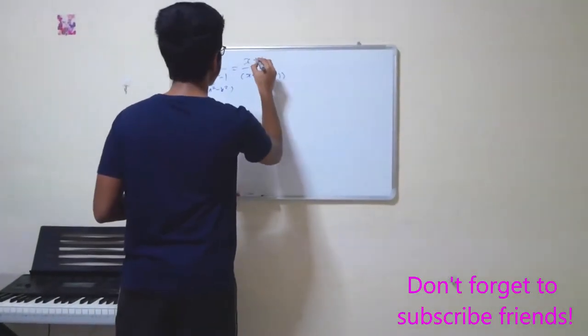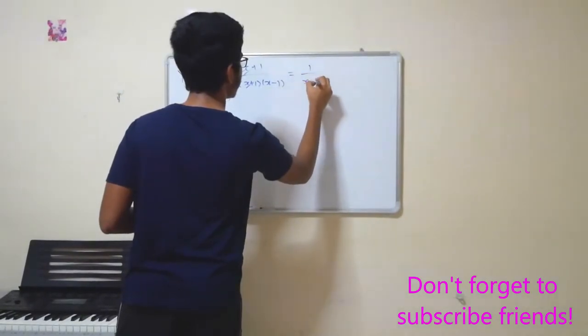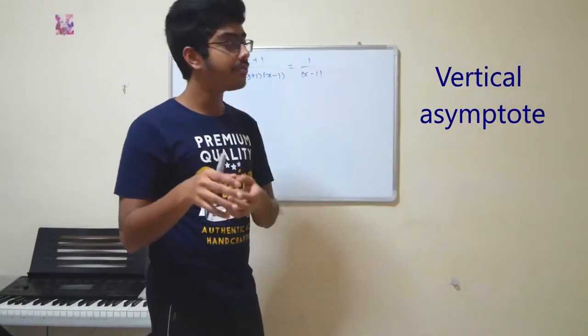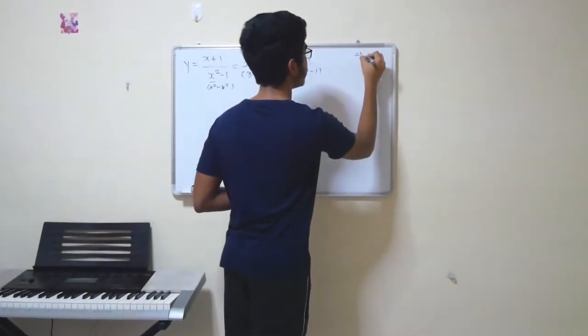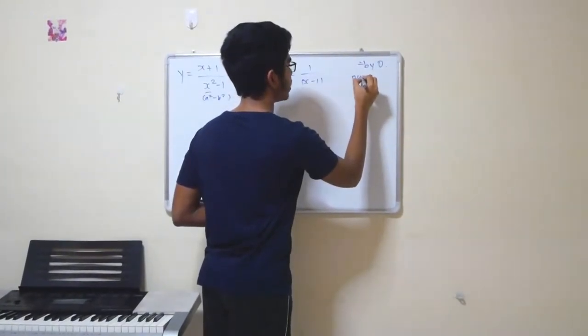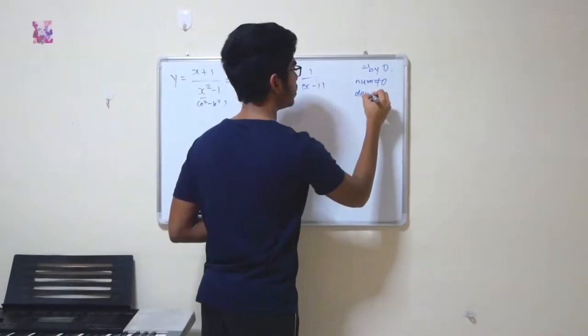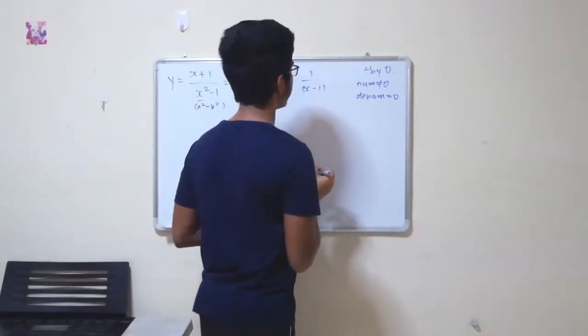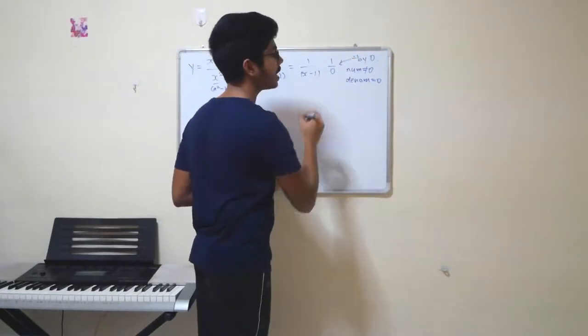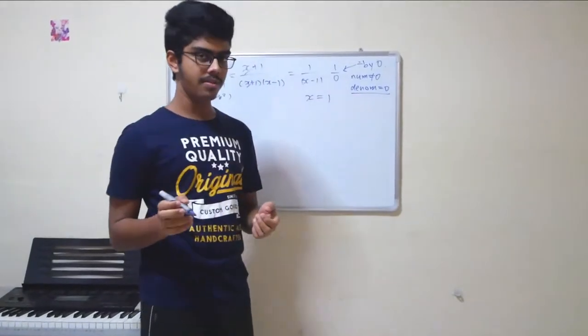Then what do you do? You cancel these two things and you're left with 1 over x minus 1. So when you try to find the asymptote, it is called dividing by 0, which basically occurs when the numerator does not equal to 0, while the denominator is equal to 0. In this case, 1 over 0 will be called dividing by 0 when x is equal to 1 because this will make the denominator 0.